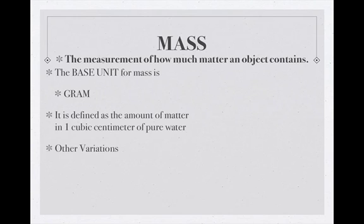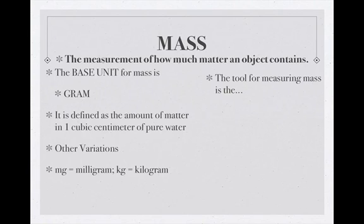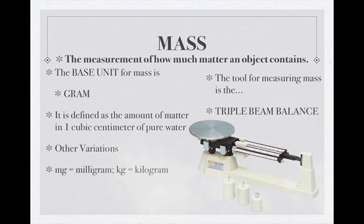So again, we have other variations. Just by plugging in those prefixes, like milli, so we have milligrams, I'm sure most of you have heard of that, and kilograms. So a milligram would be one one-thousandth of a gram, and a kilogram would be one thousand grams. And the tool that we use to measure mass is the triple beam balance. We'll spend some time working in class with these.